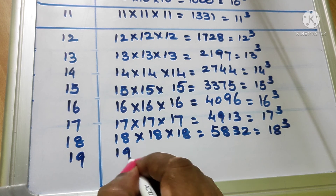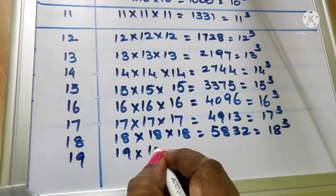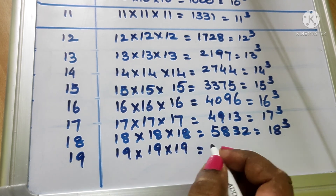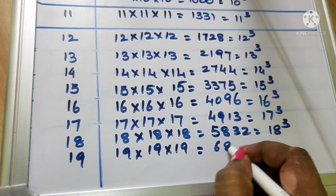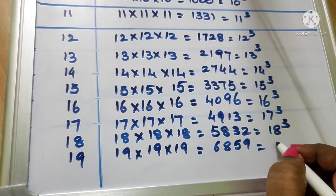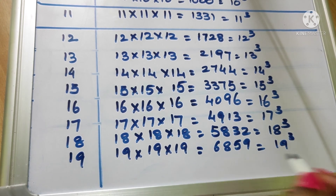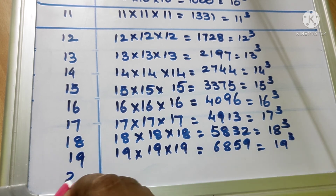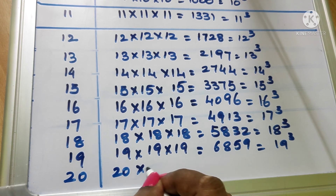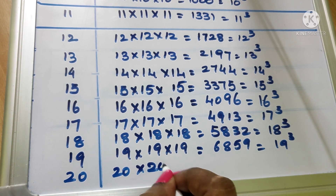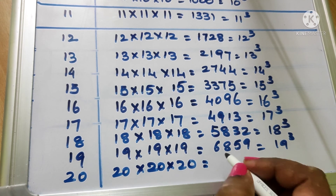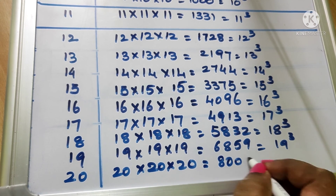19. 19 into 19 into 19 equal to 6859. 20 into 20 into 20 equal to 8000.